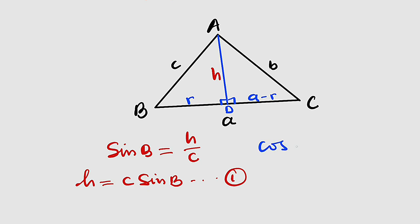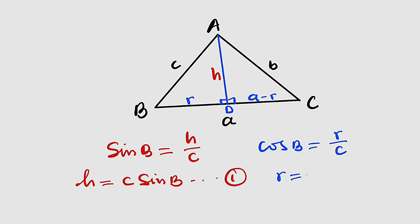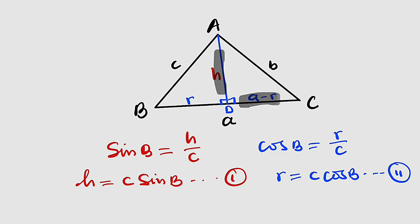Secondly, cosine of B equals adjacent divided by hypotenuse. The adjacent is r and the hypotenuse is c, so cosine B equals r over c, which implies that r equals c multiplied by cosine B. This is our equation number two.